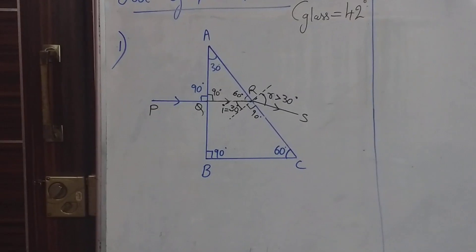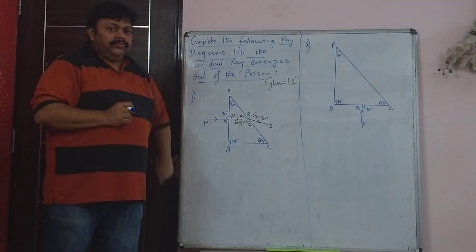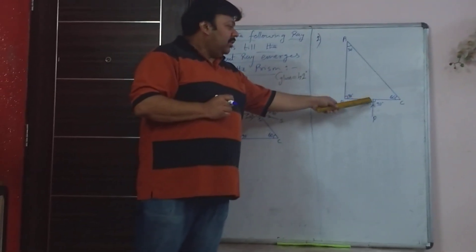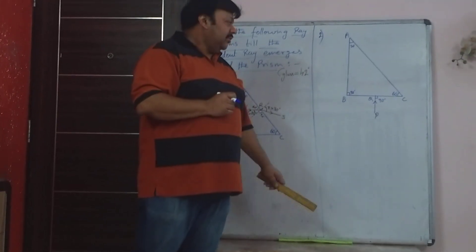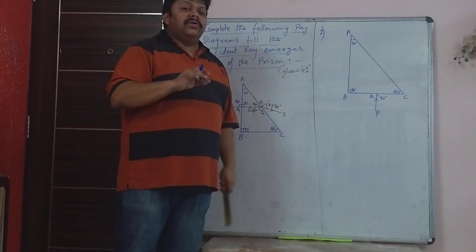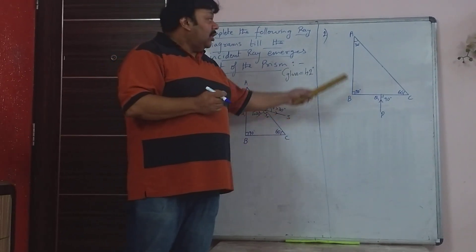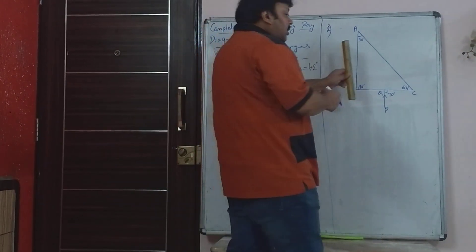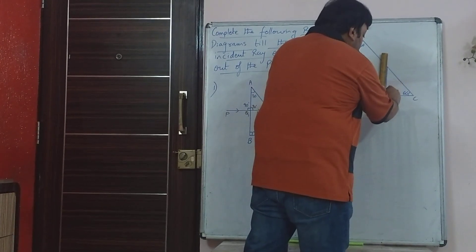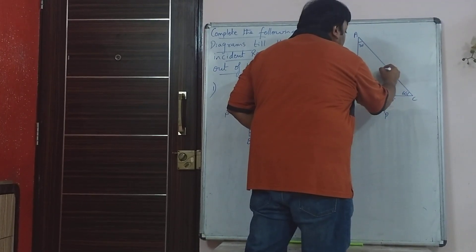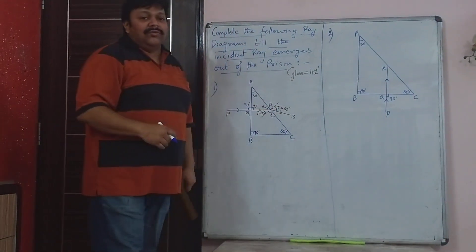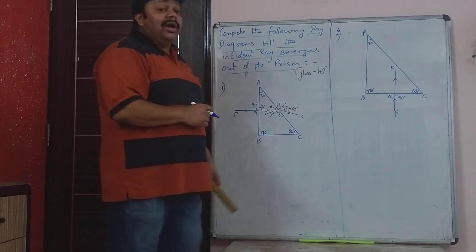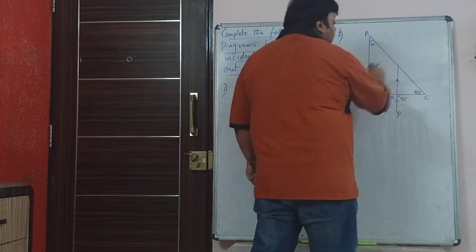Now the next diagram. Here the incident ray PQ is incident at the base BC — so the position of the incident ray is different and the entire diagram changes. This is again the same 30-60-90 prism. At point Q, the ray goes undeviated straight along QR. Next, you have to find what is the angle of incidence at point R.